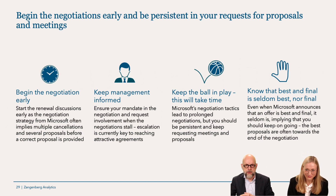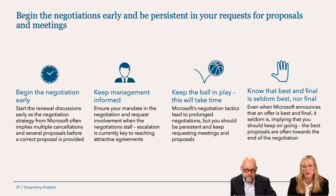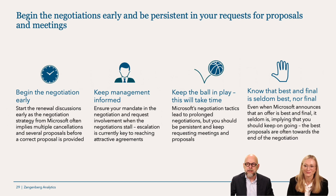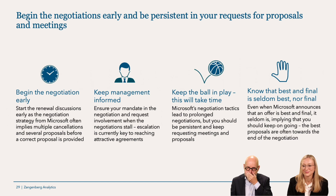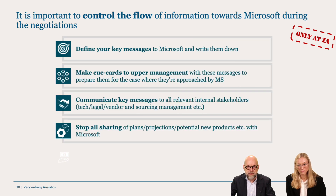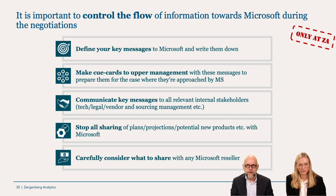With only nine minutes left, let's talk about negotiating these contracts and defining your negotiation strategy before entering negotiation with Microsoft. Start early — we've talked about that. Keep management informed — very important. Make sure every duck is in a row. Keep the ball in play because this will take time. Know that 'best and final' is neither best nor final — we've been in negotiations where we've seen Best and Final 5.0. Control the flow of information: define your key messages to Microsoft, write them down, and brief upper management.